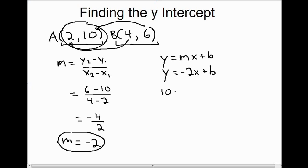So instead of writing y, I'll write 10. And instead of writing x, I'll write 2. So now again, we simplify. Negative 2 times 2 is negative 4. Bring that minus 4 over to the other side. It becomes plus 4. And we get b equals 14.